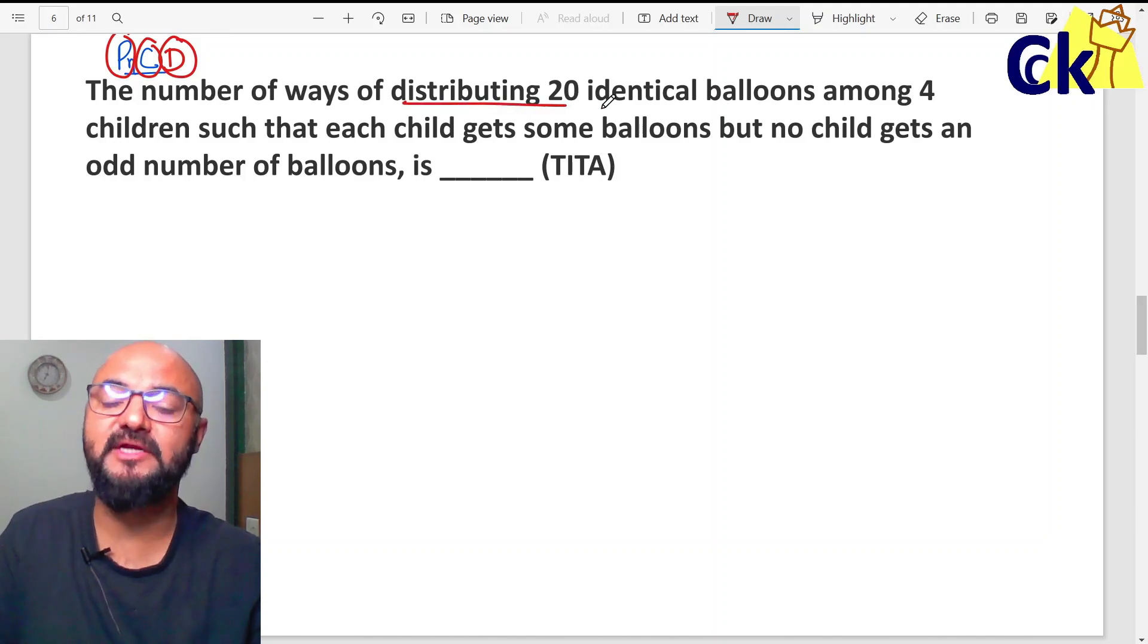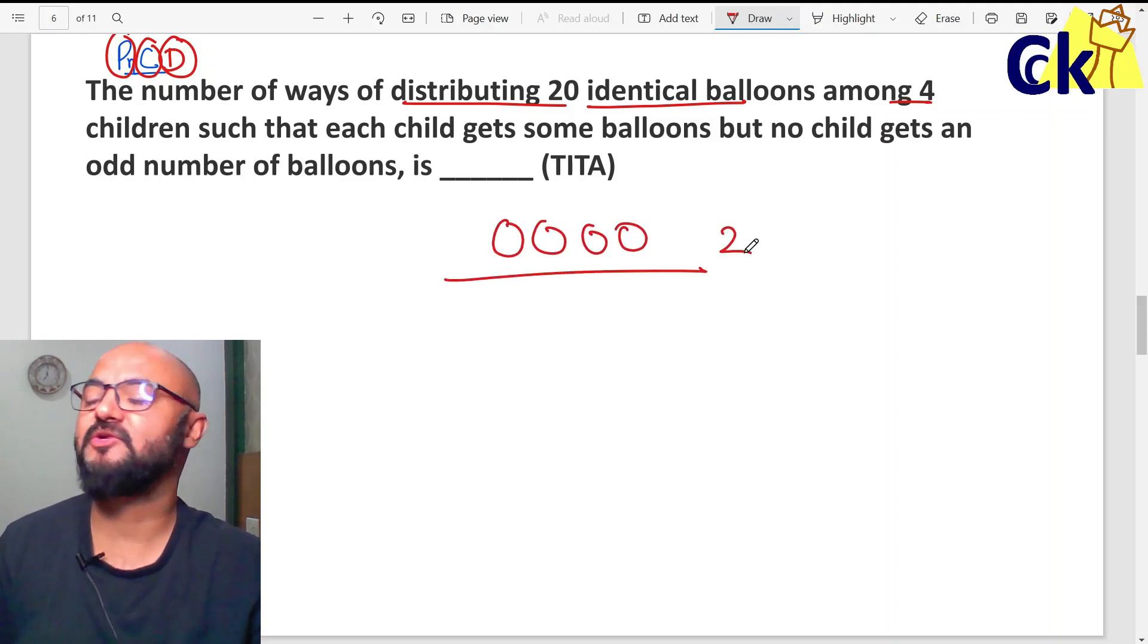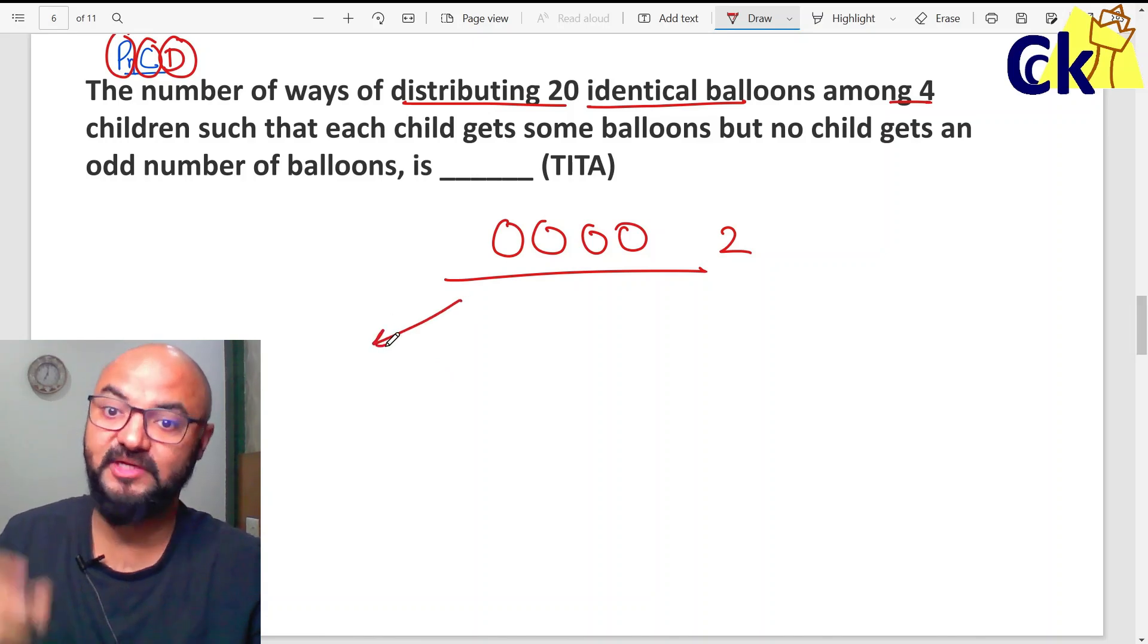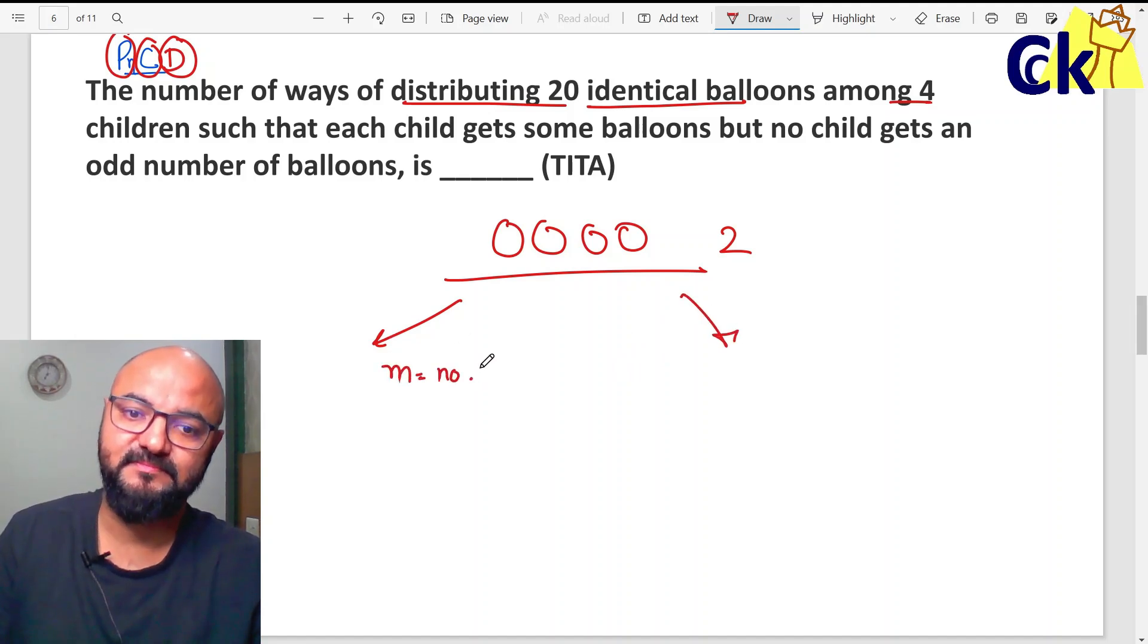How many ways you can distribute 20 identical balloons among 4 children? Main ka easy question kar do. How many ways you can distribute 4 chocolates among 2 children so that everyone should get at least one chocolate? This ko solve karne ki hamare paas formula. Let M is the number of chocolates to be distributed and N is the number of children.